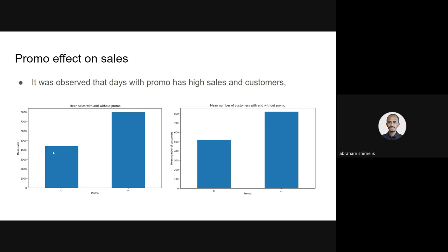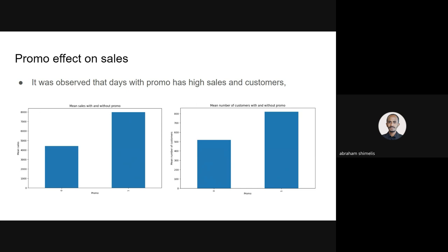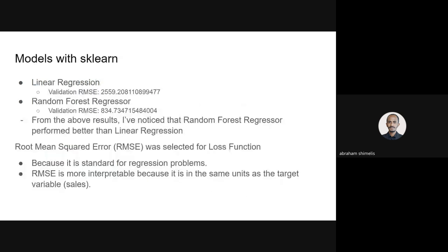I think that's all about the EDA analysis I performed. For task two, I tried to build a model using the scikit-learn library. I tried linear regression and random forest regressor models. I evaluated their performance using root mean square error. As you can see, the linear regression has a high amount of error, while random forest compared to linear regression is better.